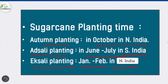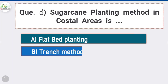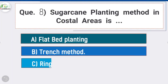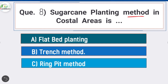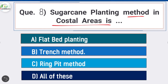Question 8: Sugarcane planting method in coastal areas is — option B is correct: trench method. Trench method of sugarcane planting is followed in tall-growing cane areas such as coastal areas to protect sugarcane from lodging.